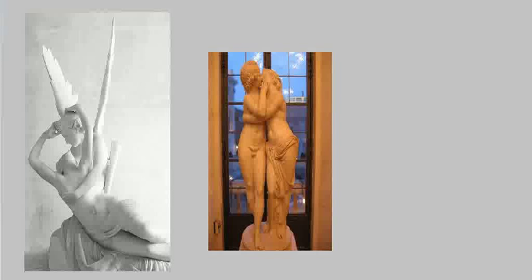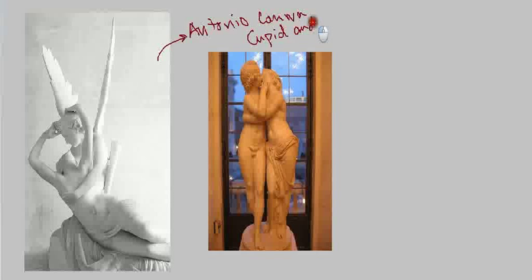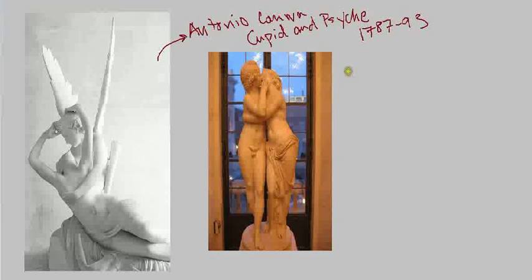Now just one sculpture from the neoclassical period, by an artist named Antonio Canova. This is his sculpture of Cupid and Psyche, dated 1787 to 1793. Neoclassicism wasn't just in painting — it came out in sculpture as well. This comparison of Canova's Cupid and Psyche with an actual Cupid and Psyche from the classical world shows how neoclassicism doesn't completely copy classical art.